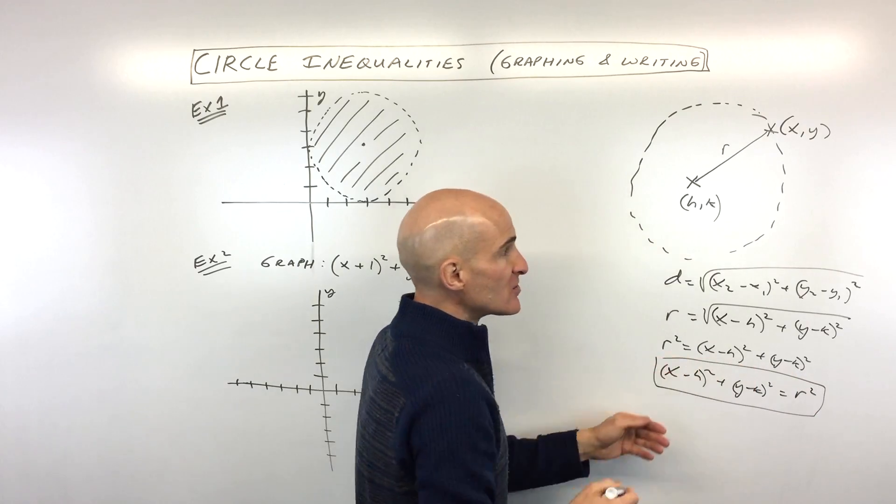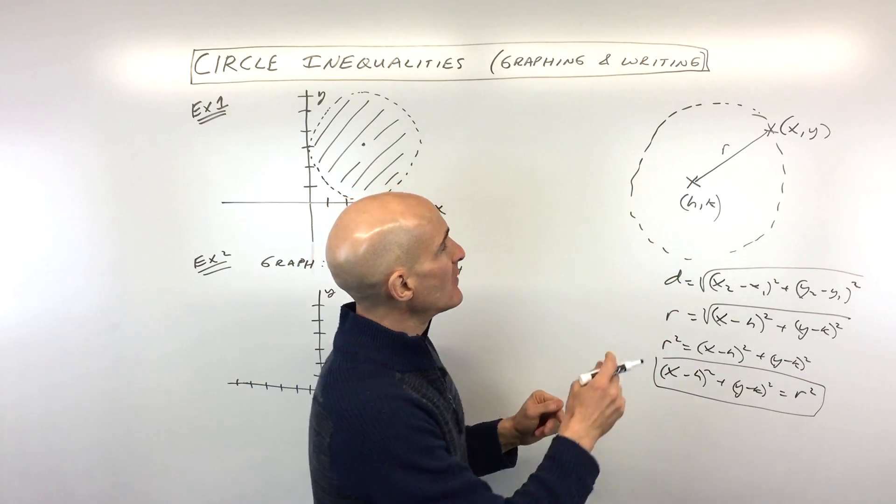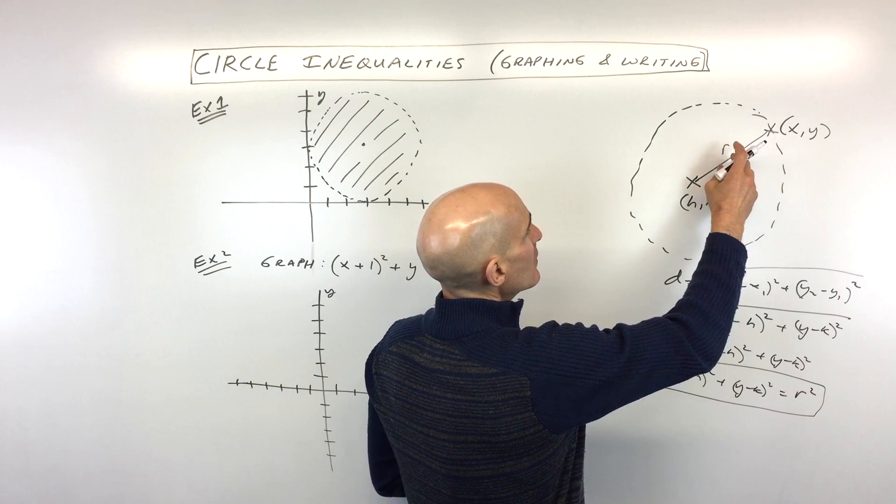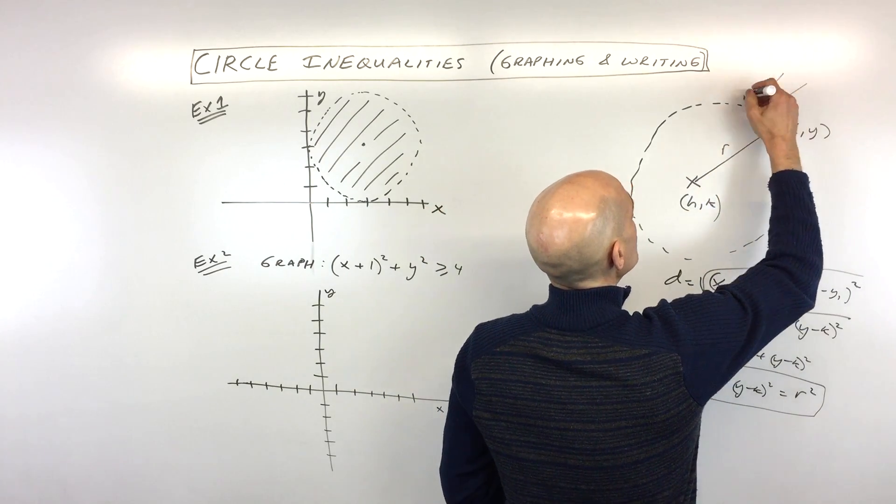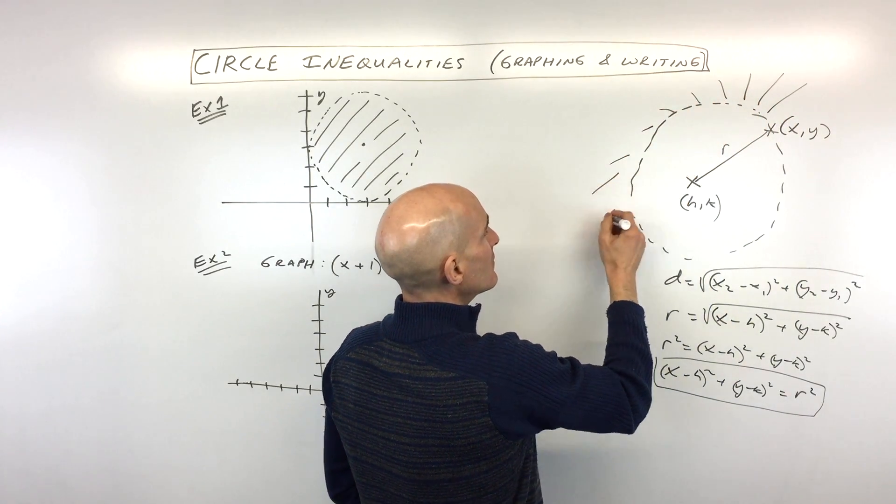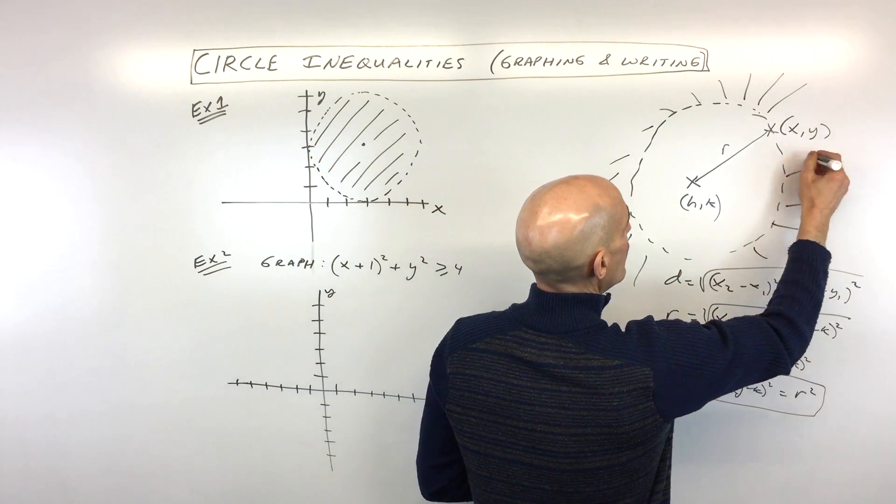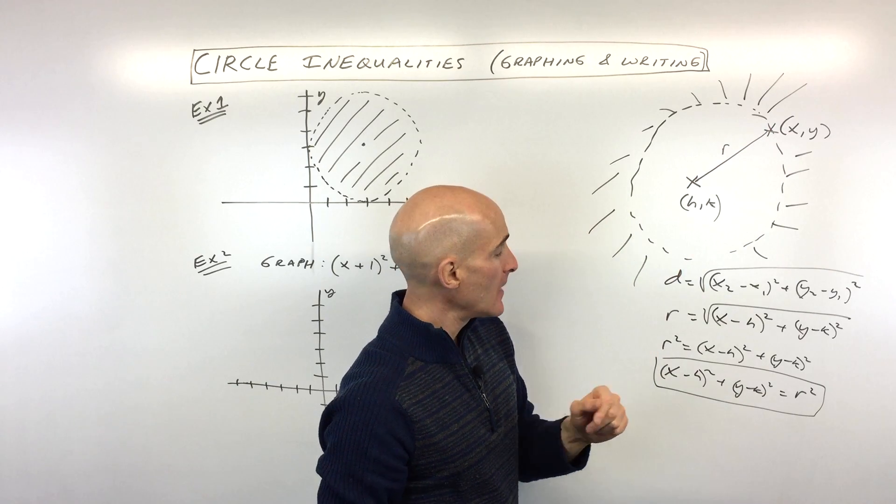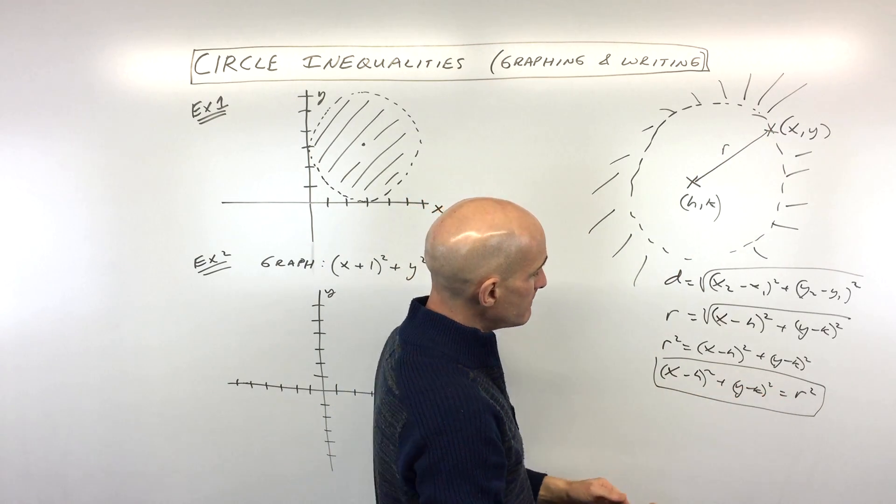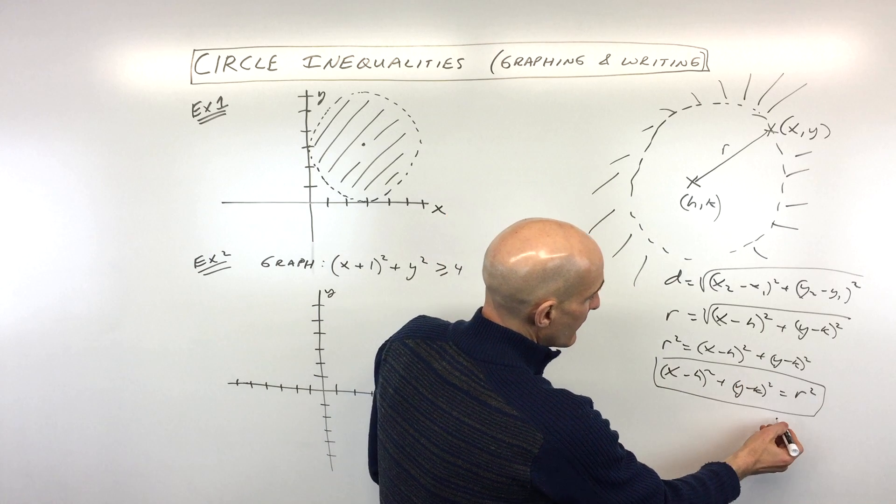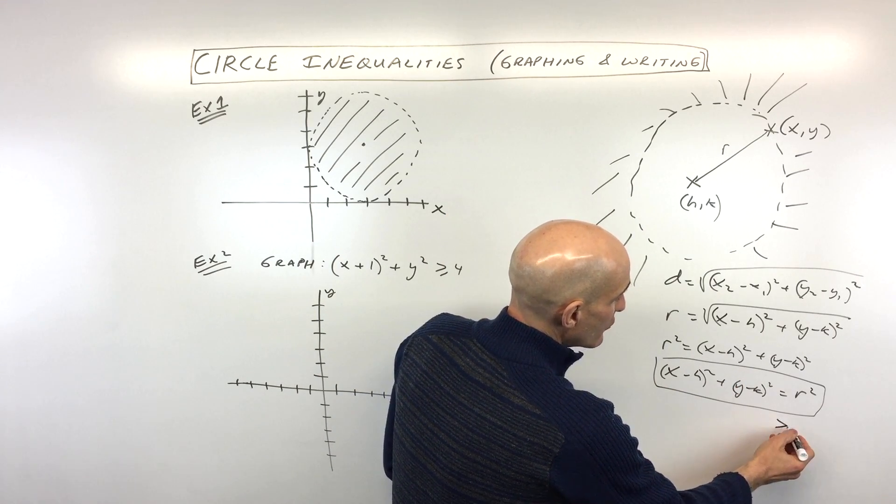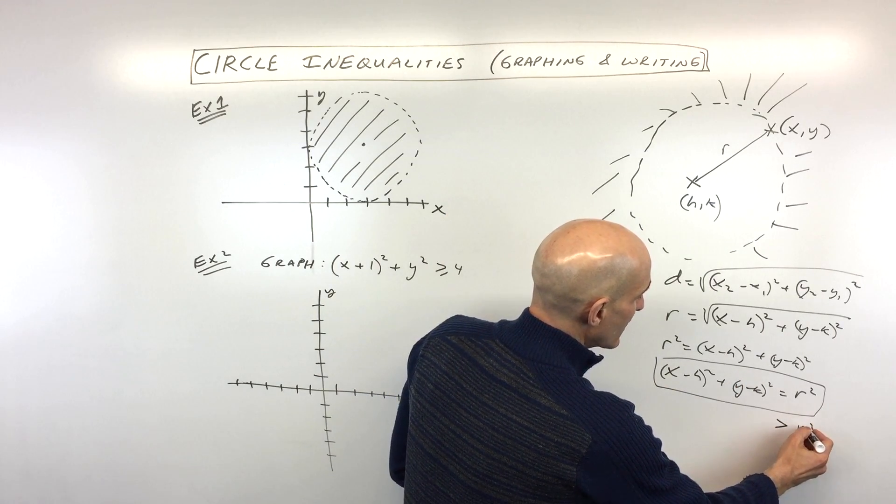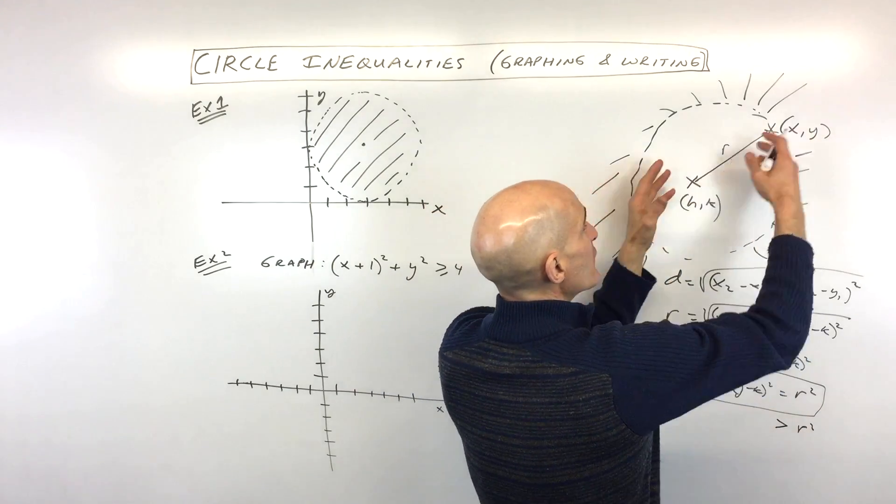But the reason I mention this, and the reason I show you this is that imagine if you wanted to find all the points that were further away, so all the set of points that are further away than this distance, this radius. Well, what you would do then is you'd say, instead of making this equals r squared, I'm going to make it greater than the radius squared. So greater than means it's going to be further away.